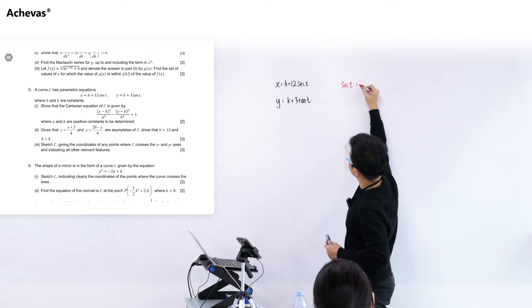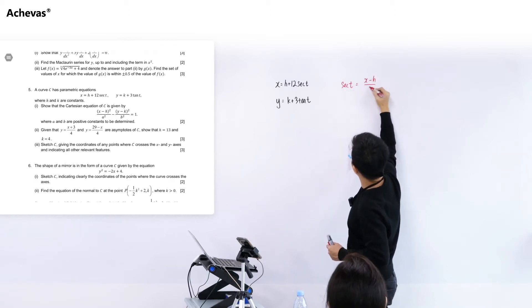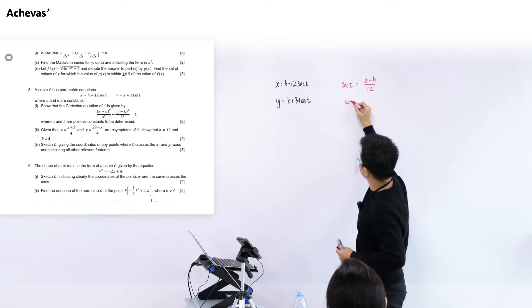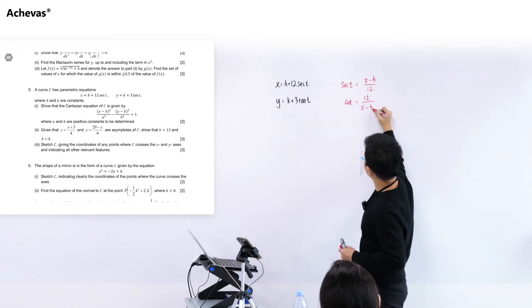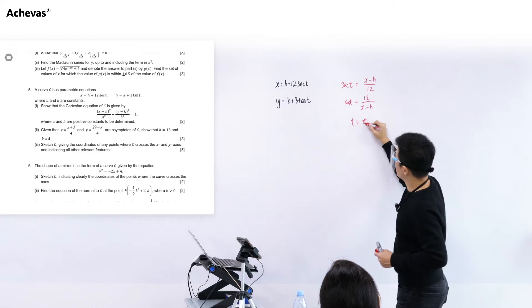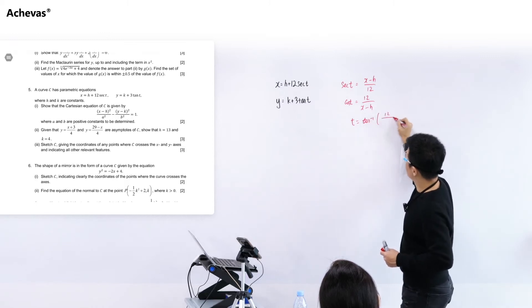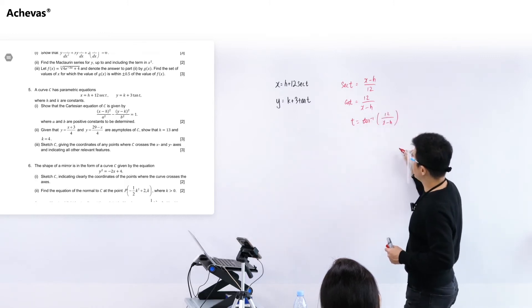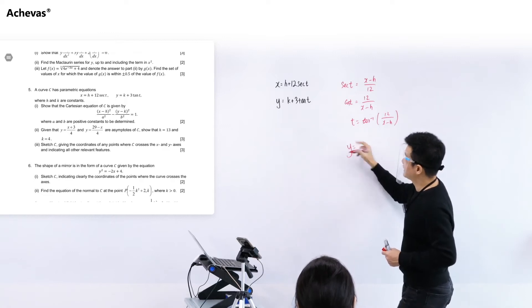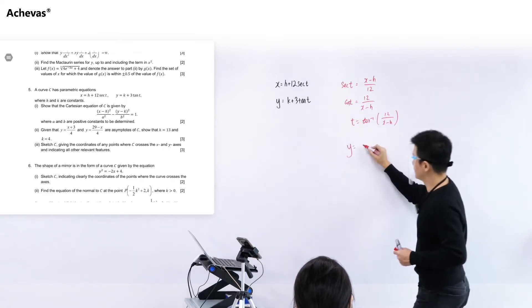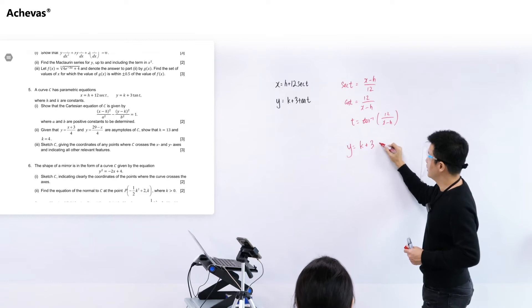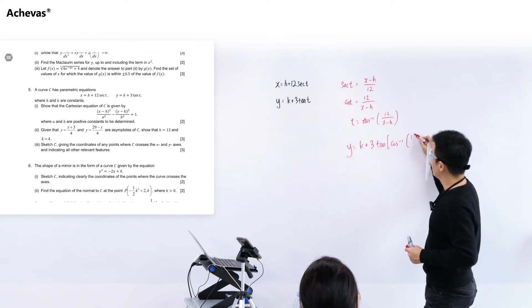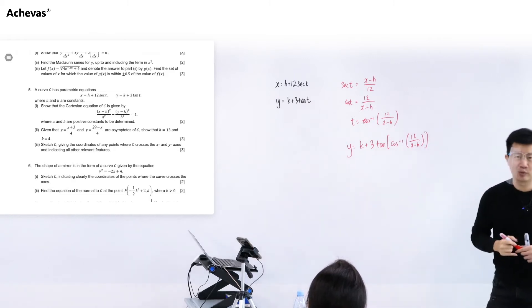So secant t, this is going to be x minus h divided by 12 which means that cosine t is going to be equal to 12 over x minus h. That means t must be cosine inverse of 12 over x minus h which means that the Cartesian equation, it is going to be k plus 3 of tangent of cosine inverse 12 over x minus h. Okay, that's what some people will do.